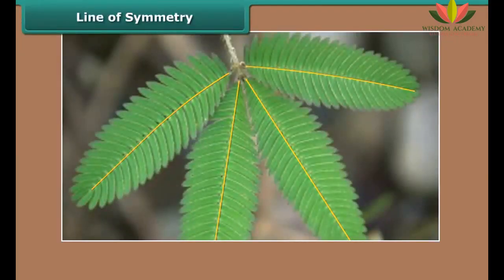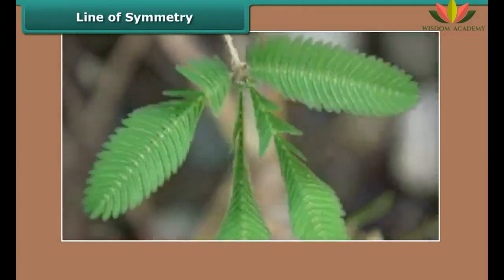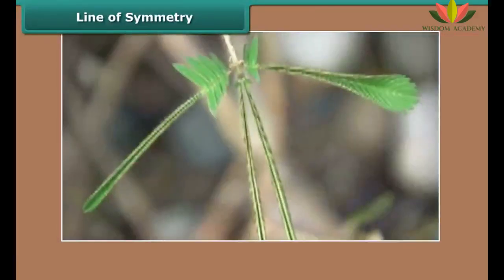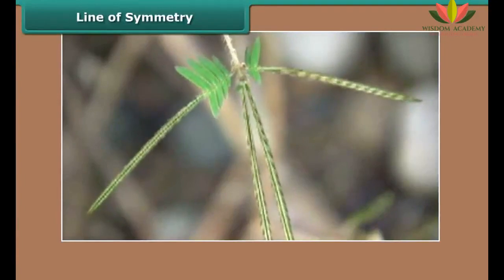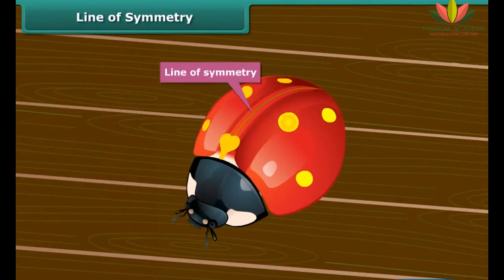Look at the touch-me-not plant's leaves. When you touch, it is folded in halves. Can you see the two halves matching each other? This particular line created by folding of the leaves is called the line of symmetry. This bug also has a line of symmetry along which it folds into two identical halves.